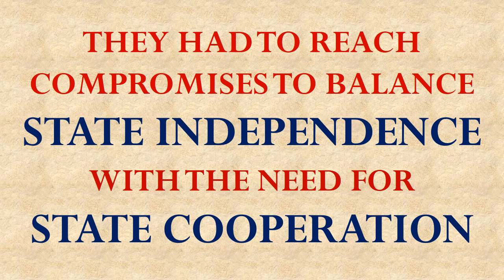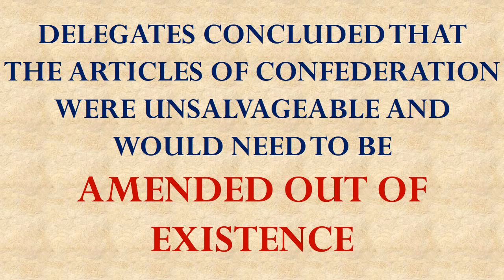The delegates also had to try to leave the states with a sufficient feeling of independence, while providing a national uniting government with enough power to get the states to cooperate. They realized they couldn't accomplish these purposes under the Articles of Confederation, so the convention agreed to amend the Articles of Confederation out of existence. The delegates were only empowered by their state legislatures to suggest amendments, so they used that amendment power to replace the entire Articles with something else.